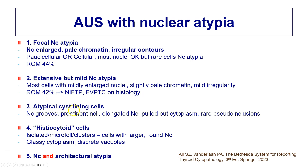We also have atypical cyst lining cells, where the nuclei can show enlargement, nuclear grooves, prominent nucleoli, and elongation. A good clue is that the cytoplasm is pulled out and sometimes tapering, and there may even be rare pseudoinclusions. These are reactive changes and are usually non-neoplastic. We also have histiocytoid cells — small clusters of cells with mildly enlarged round nuclei and glassy cytoplasm or many cytoplasmic vacuoles.